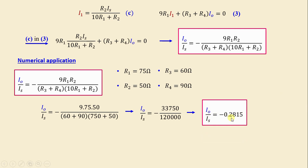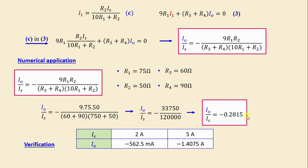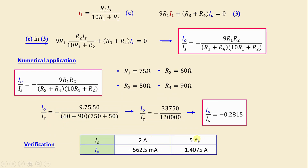Finally, IO / IS = −0.2815. To verify, we test with IS = 2 A and IS = 5 A. For IS = 2 A, we find IO = −562.5 mA, and for IS = 5 A, we obtain IO = −1.4075 A.